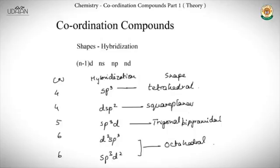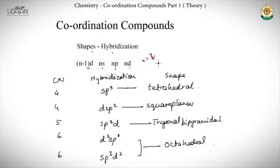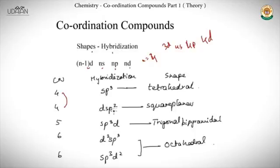The next concept is hybridization, a recap from chemical bonding. The important metal orbitals are (n-1)d, ns, np, and nd, where n is typically 3 or 4. For coordination number 4: sp³ gives a tetrahedral shape, dsp² gives square planar. Coordination number 5: sp³d gives trigonal bipyramidal. Coordination number 6: d²sp³ or sp³d² both give an octahedral shape.